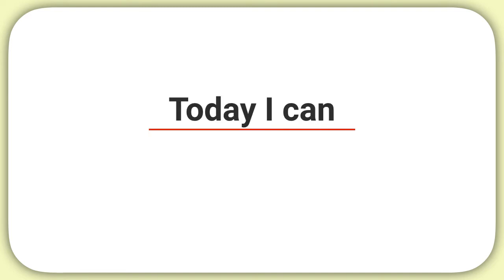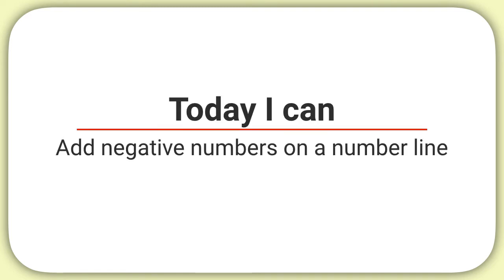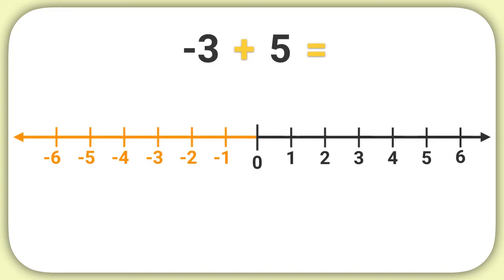Today we are learning how to add negative numbers on a number line. Let's say we wanted to add negative 3 plus 5. We'll start at negative 3, and we'll draw a person right there.